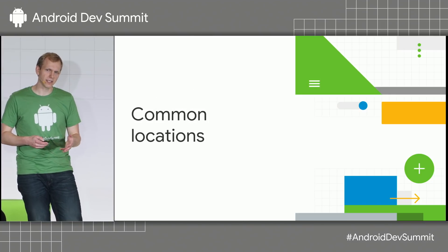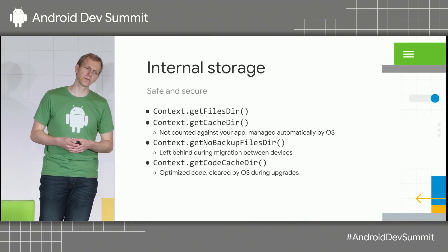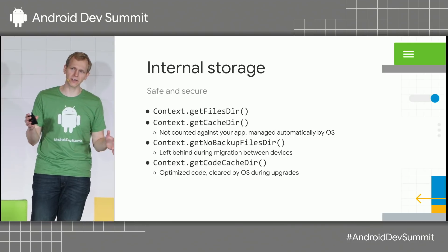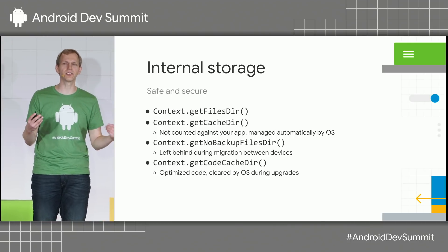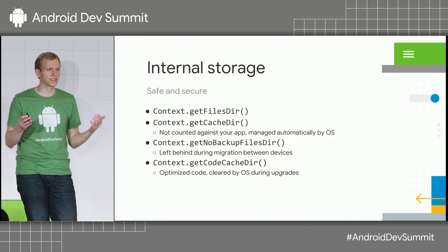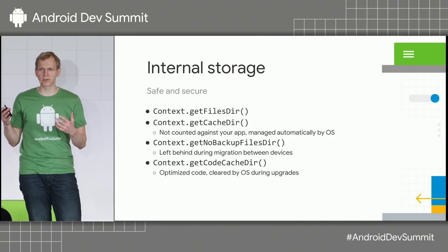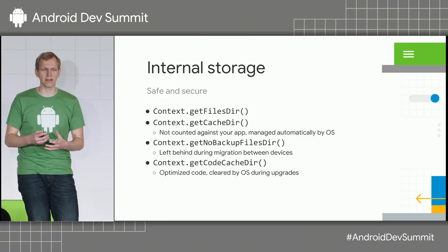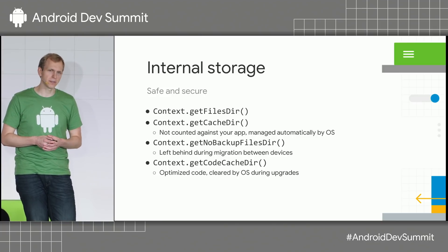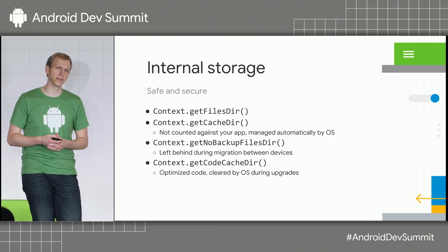We'll start by looking at some common locations that Android offers. The first broad category is internal storage. This storage can be classified as safe and secure because the Android OS protects it — it's part of the application sandbox model. You've probably encountered some of these directories before, like context.getFilesDir, which is a great default location to store things.